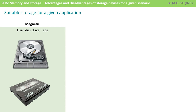Magnetic tapes have a high capacity, but they're very slow to access data. They're highly portable and reasonably robust. They're fairly reliable, but they can be damaged if not handled carefully. They're a cheap solution to high-volume backup. Today, because hard disks are so cheap, magnetic tapes have largely been replaced by portable hard disks.